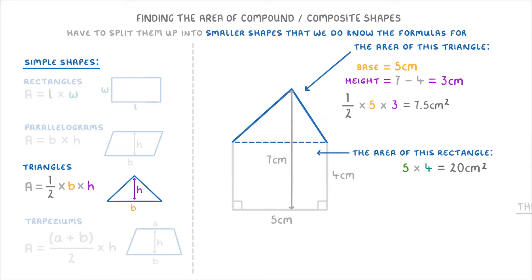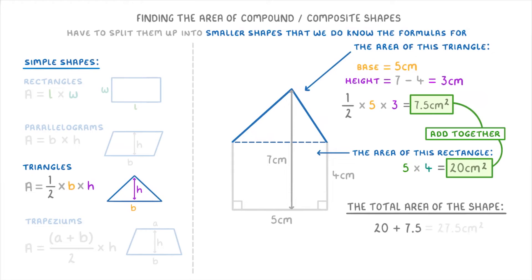And then to finish the question, we work out the total area of the shape by adding together the areas of our rectangle and our triangle. So 20 plus 7.5, which is 27.5 square centimeters. And that's our answer.